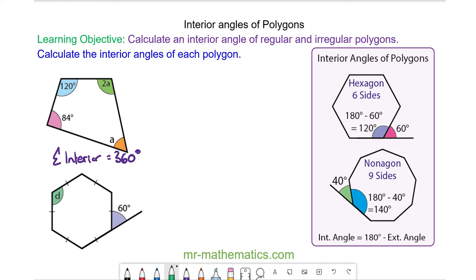We can use this fact to work out angle A because we know 120 plus 84 plus 2A here plus angle A here is equal to the total of the interior angles which is 360 degrees.